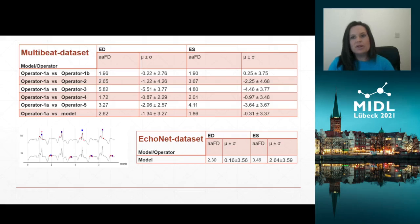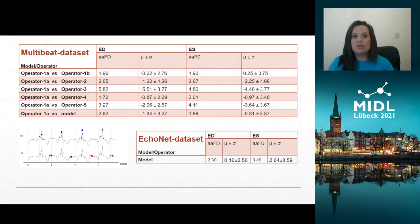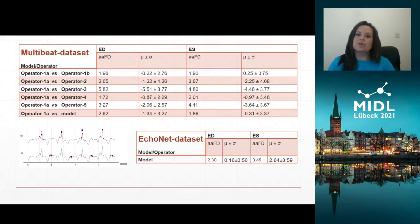For benchmarking of future studies, the model was tested on the publicly available EchoNet dataset. An average absolute frame difference of 2.3 for ED and 3.49 for ES was obtained, which is well within the range of inter-observer variability observed within the multi-beat dataset.